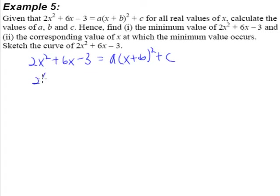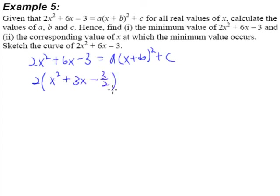We'll take out the 2 because we need to make the coefficient of x squared equal to positive 1. So I take out the 2: 6 divided by 2 gives me 3x, and negative 3 divided by 2 gives me negative 3 over 2. Remember to put a big bracket outside. This is the first step of completing the square.